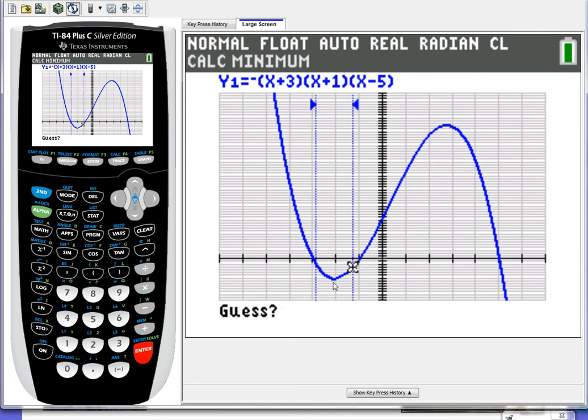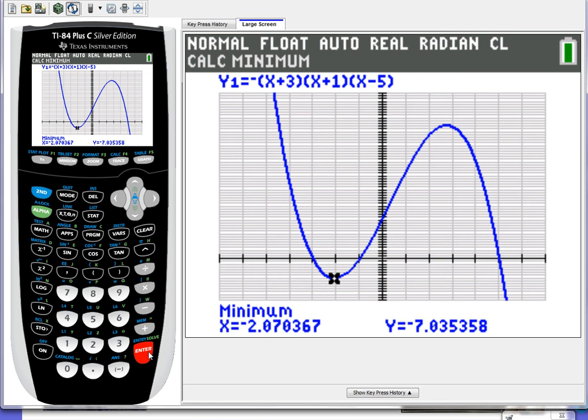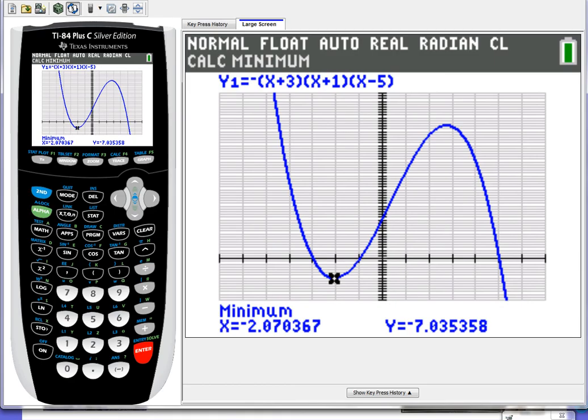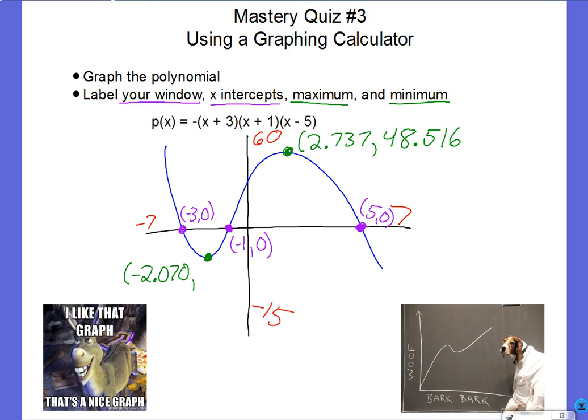Enter to say, hey, it's somewhere in there. And I could guess, I could move it over there, but I'm too lazy to do that. I'm just going to hit enter again. And boom, there's my minimum. Negative 2.7070 and negative 7.035. So I'm going to write those. We got negative 2.070 and what's the other one? Negative 7.035.